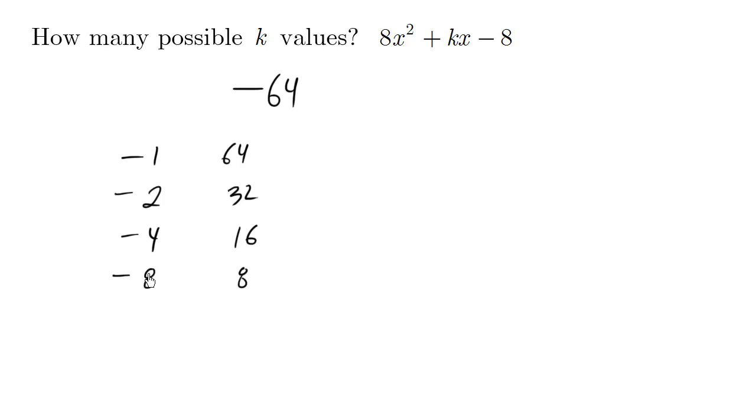I'm going to try putting the negative signs here because this times this is this. And the k value would be these two numbers added, which is 63, 30, 12, and 0.